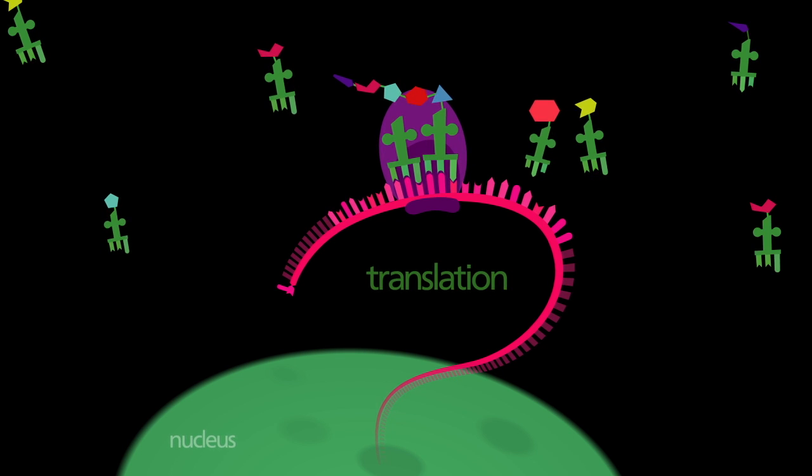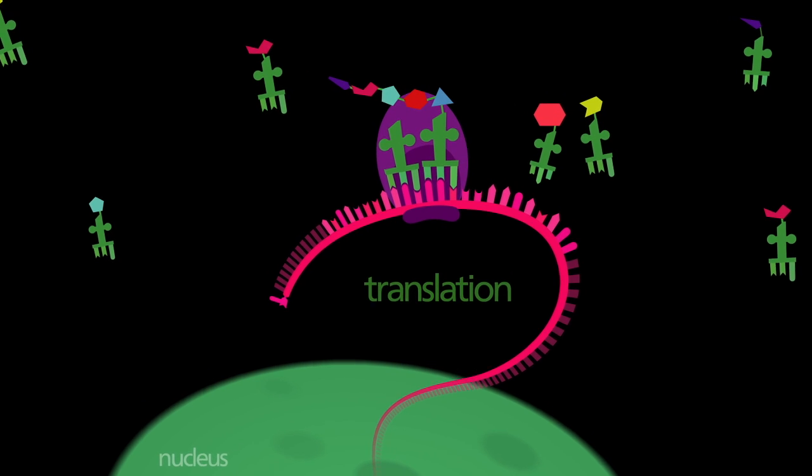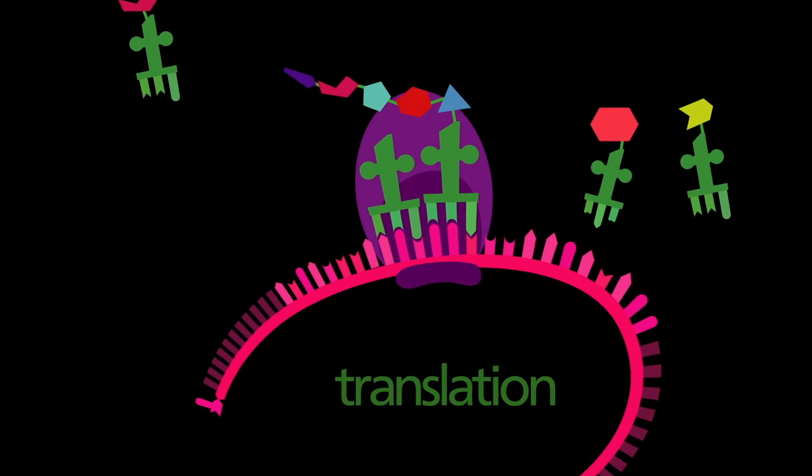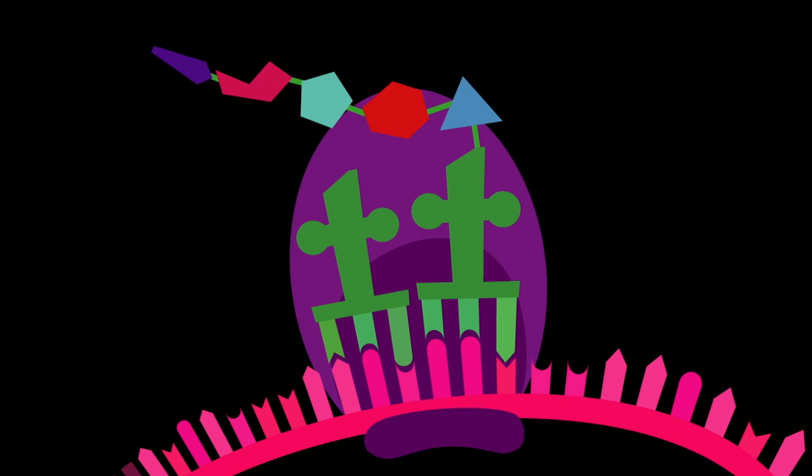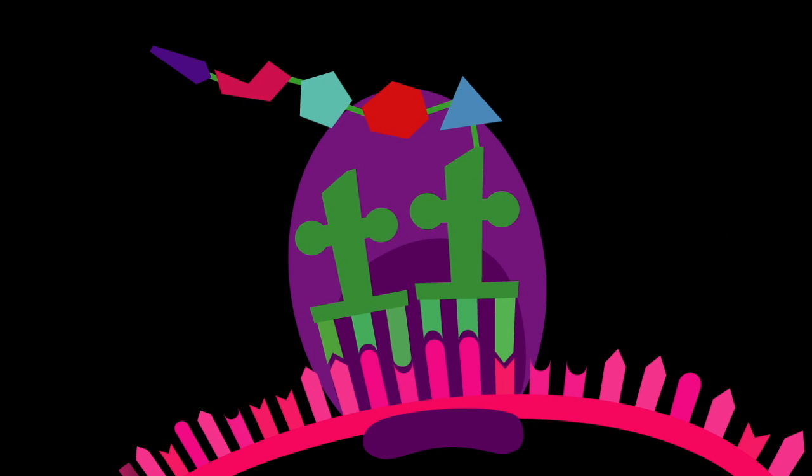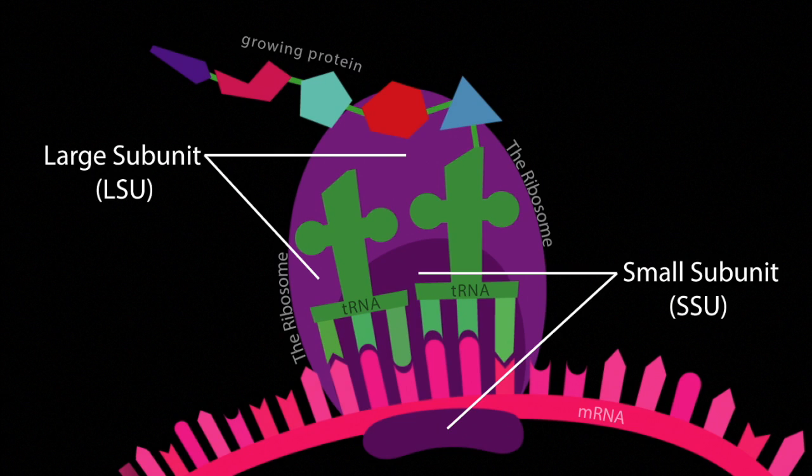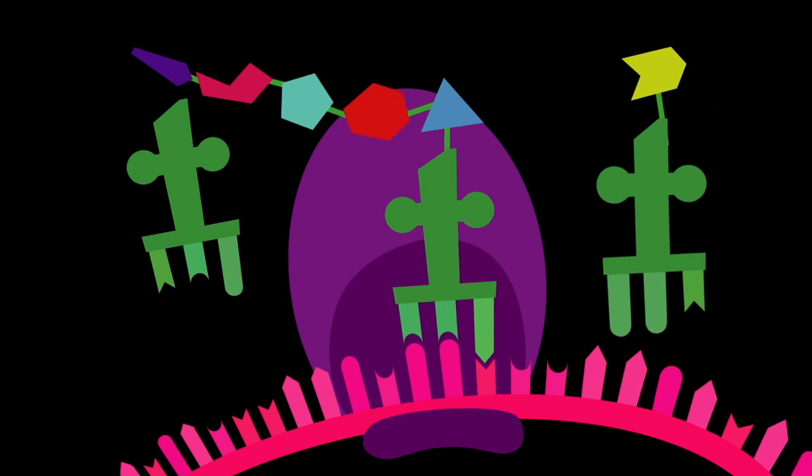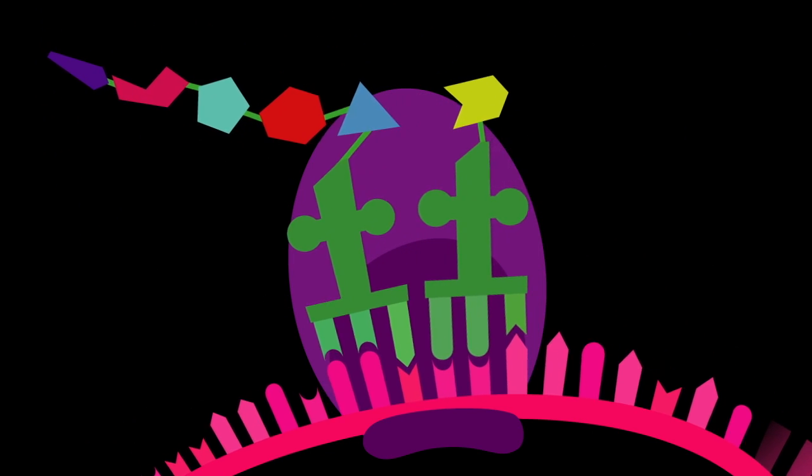The synthesis of protein by the ribosome is called translation. The ribosome is the most ancient and universal macromolecular assembly in the biological world. The ribosome has a small subunit that reads the mRNA. The ribosome also contains a large subunit that links amino acids in the correct sequence. tRNAs deliver amino acids to the ribosome.